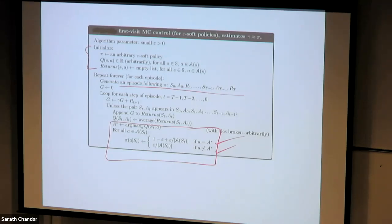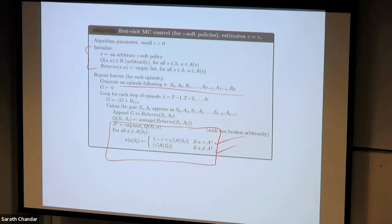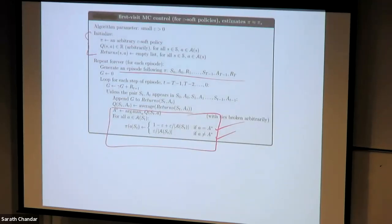We discussed Monte Carlo control. We first started with Monte Carlo control with exploring starts, where the idea is you can start with any possible state-action pair combination. The advantage is you can now learn a deterministic optimal policy. But if we have to remove this exploring start assumption, instead of finding deterministic policies, we came up with the combination of Monte Carlo with an epsilon-greedy approach, which would guarantee to give us the best optimal epsilon-soft policy.